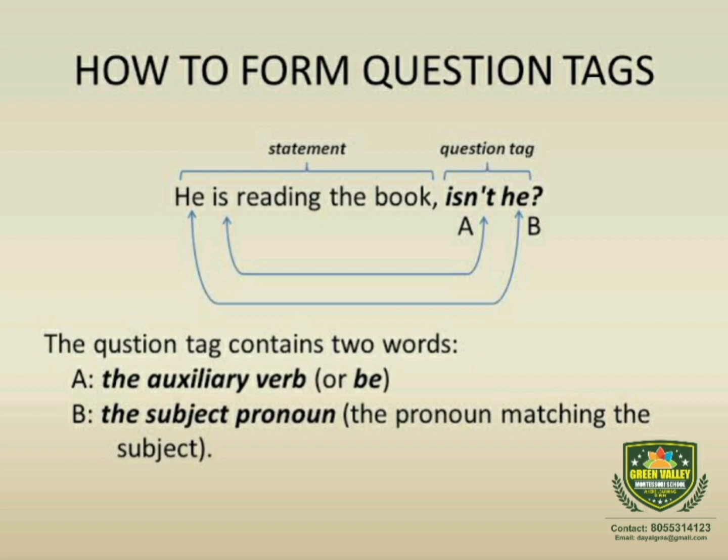For example, the statement is 'He is reading the book.' As the statement is in positive (affirmative) form, we make the question tag negative. The auxiliary verb here is 'is', and since we need a negative tag, we add 'not' to get 'isn't'. Then the subject pronoun is 'he', and we add a question mark. So our question tag is formed: 'He is reading the book, isn't he?'